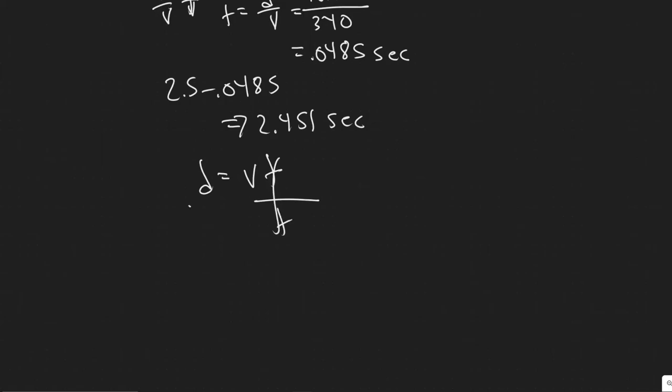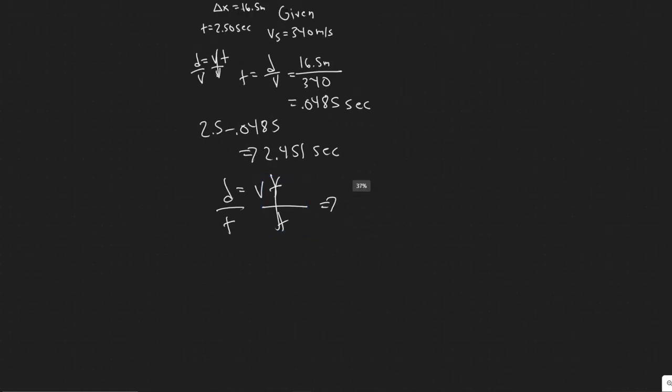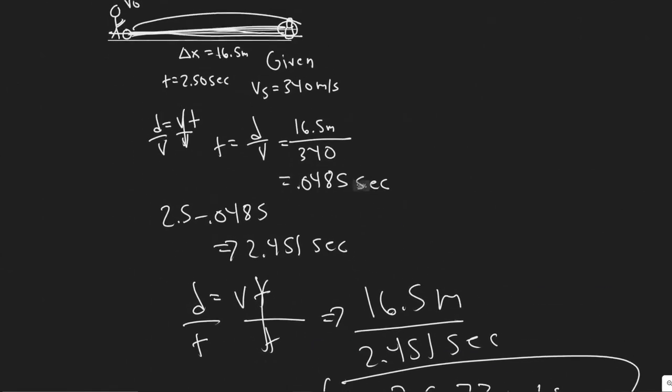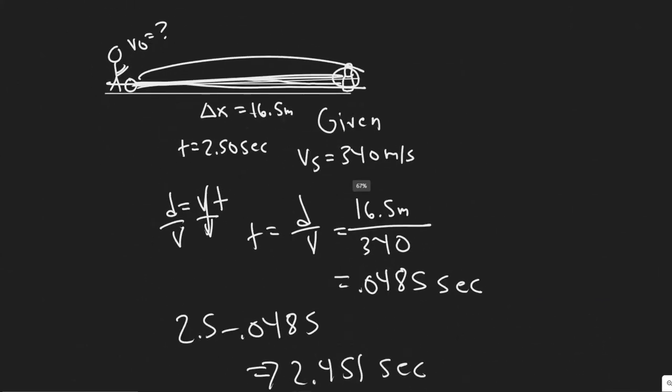So our velocity, which is the same as the initial, is going to be the distance, which is 16.5 meters, and then you're dividing by 2.451 seconds. And so I'm going to use the exact value here that I have in my calculator. And you're going to get about 6.73. So 6.73, and then the units are going to be meters per second, which is what we wanted, velocity. So the initial velocity, or the speed at which it is thrown, is 6.73 meters per second.